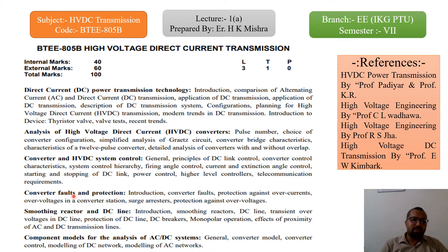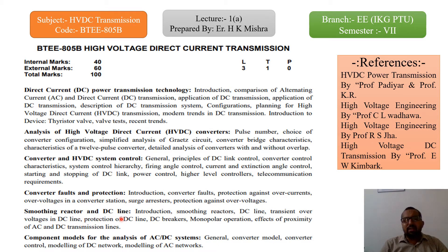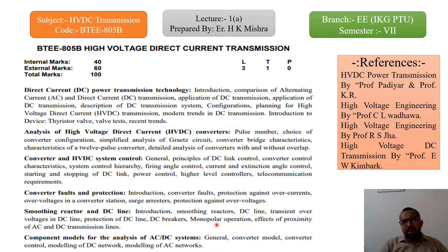The fourth module covers Converter Faults and Protection, discussing faults and protection of converters after designing them. Topics include protection against overcurrent in converter stations, surge arrestors, protection against overvoltages, smoothing reactors, DC line transient overvoltages, protection of DC line, DC breakers, and monopolar operations.